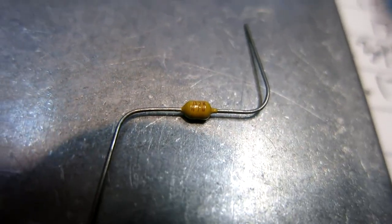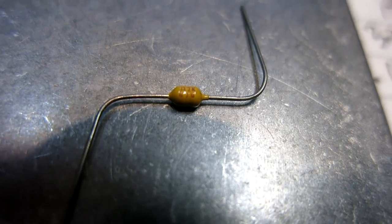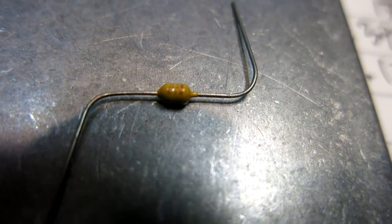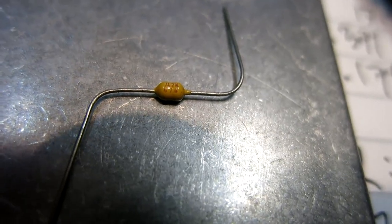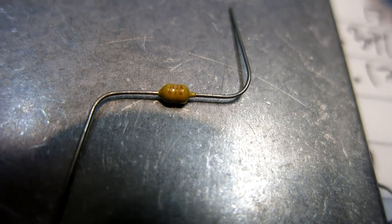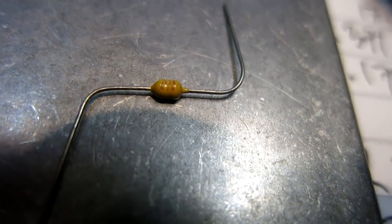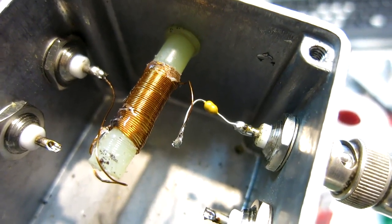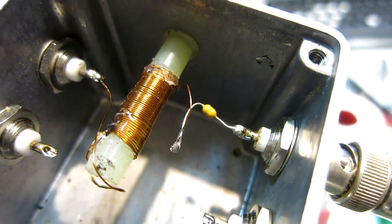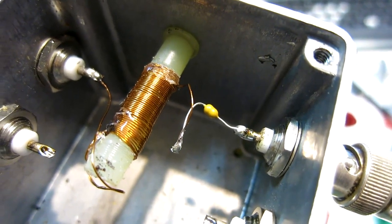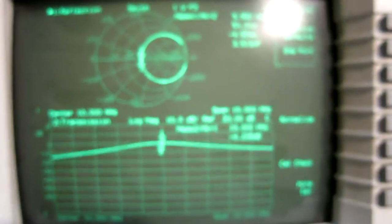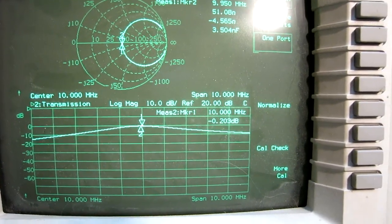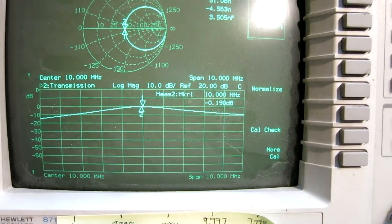The first capacitor I look at is one of these. It says A2K. Maybe it's not an A. Maybe it's a symbol of some kind. And then it says 4704. 47 pf. I have mounted one of them in this box in series with an inductor that I have tuned for resonance on 10 MHz. And I am looking at that with the network analyzer.